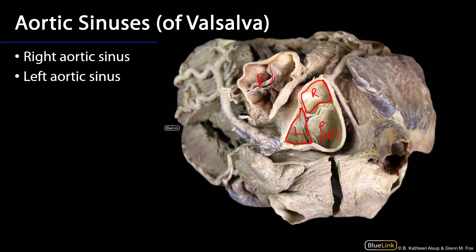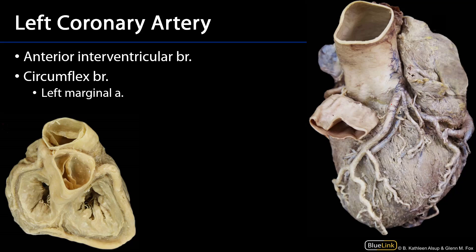Here is the pulmonary trunk, here is the right auricle, and there is the superior vena cava opening. Here's the base of the heart — we can see it's been incised — so there's the left atrium and here's the auricle of the left atrium. The right atrium is going to be over here. So we really have a sense for which way is up, so to speak.